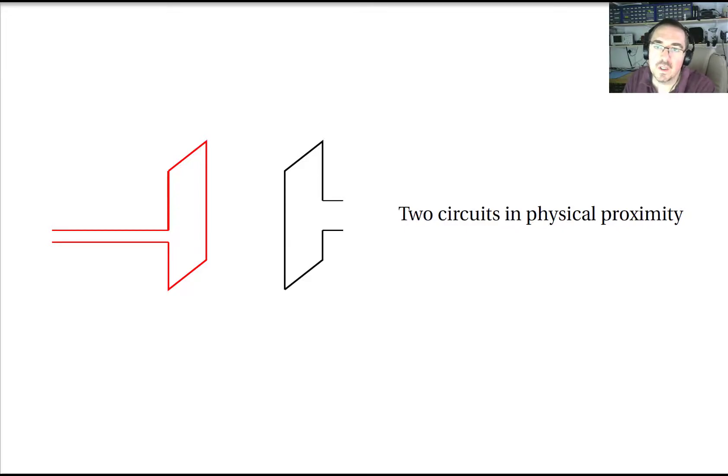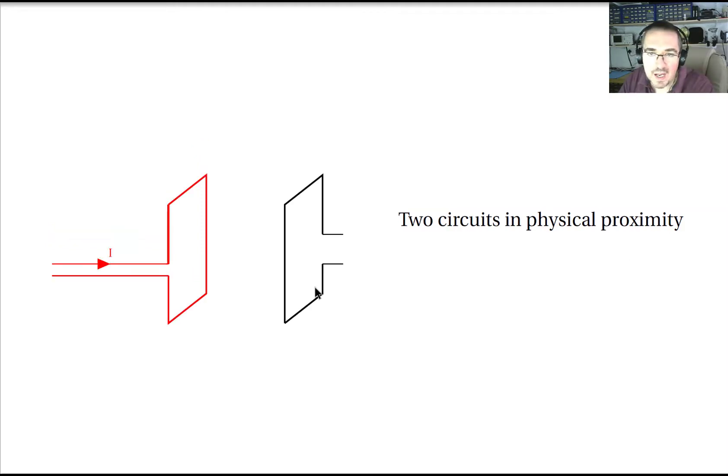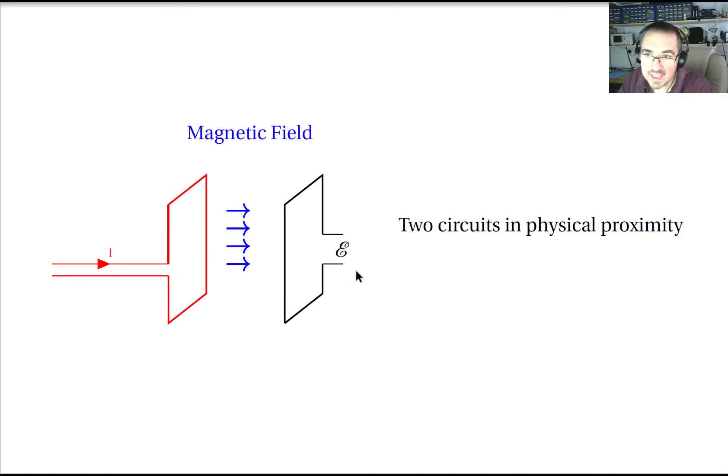Suppose we have two circuits which are in close proximity to each other but physically separated. Now suppose we pass an alternating current through circuit one. This of course generates a magnetic field and by Faraday's law we get an induced voltage on circuit two here.